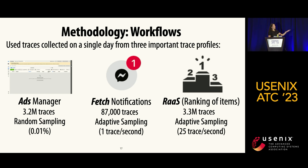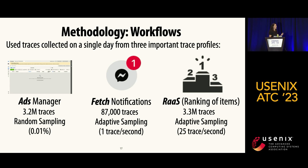Finally, we use traces from the RAS service — ranking of items. This service is internal within Meta's topology, not a root service, and has 3.3 million traces collected with adaptive sampling at a target rate of 25 traces per second. We picked these three profiles because they're relatively important to Meta and are assumed to be well-instrumented with well-defined sampling policies.